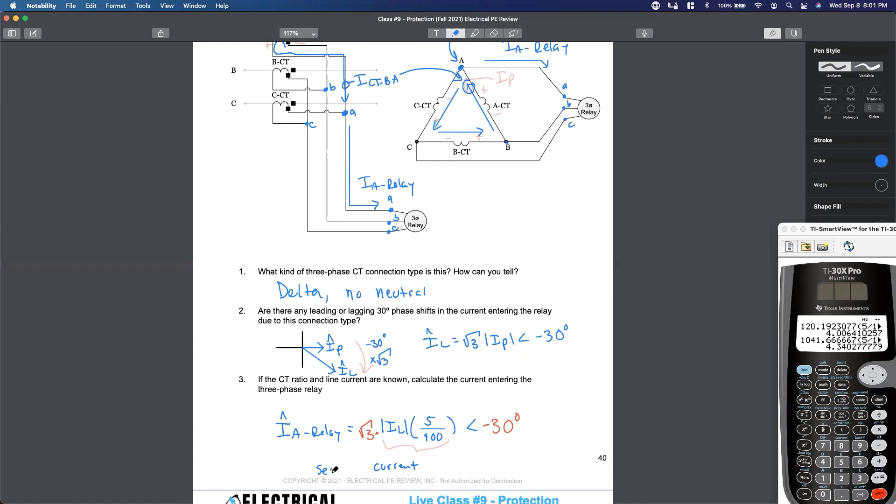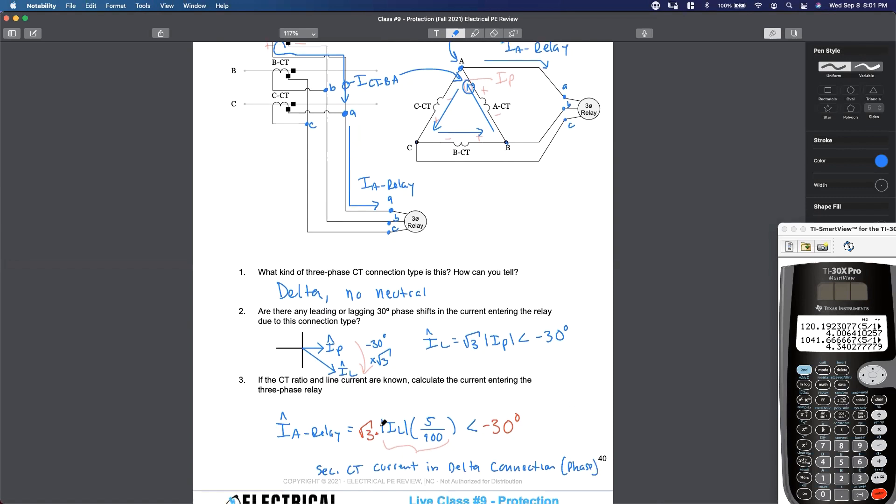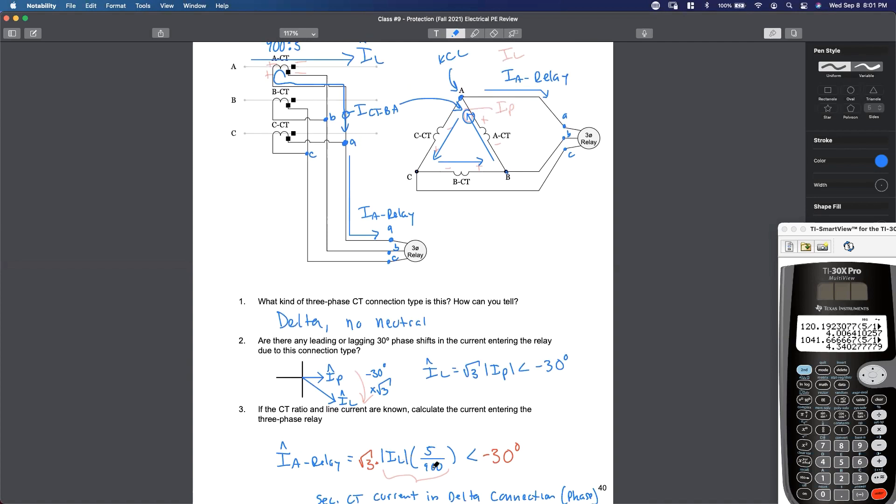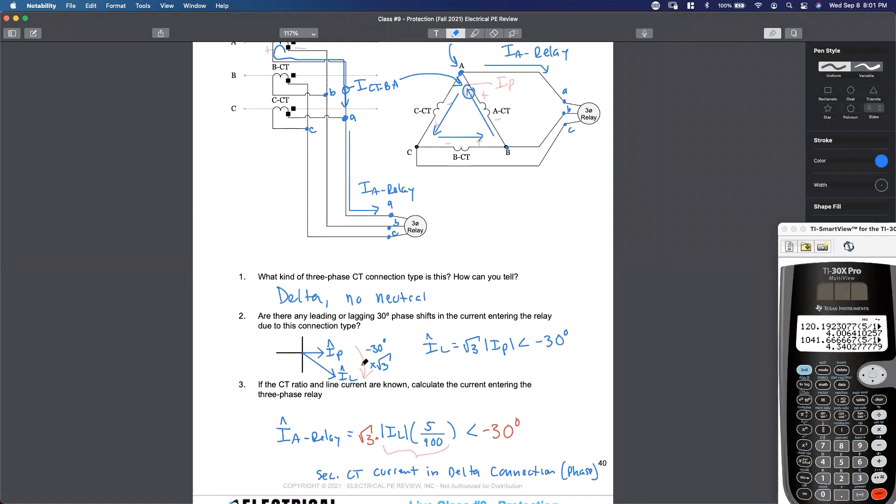This right here is the current, the secondary CT current in the delta connection phase. I line, step down by 5 to 900, is this current from B to A. To leave the delta, we've got to multiply by the square root of three, right? Here's the phase current on the secondary of the CT inside the delta. To leave the delta, it gets bigger by the factor of the square root of three, and then it lags by 30 degrees. It's just your delta relationships. Does that make sense?